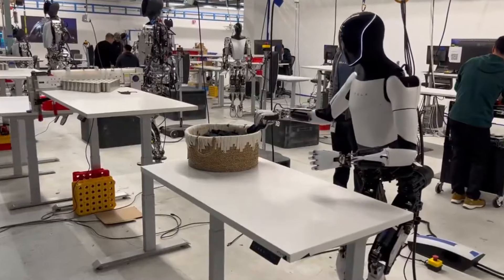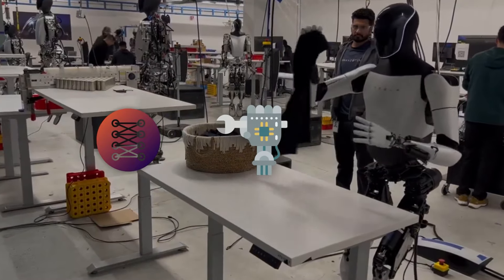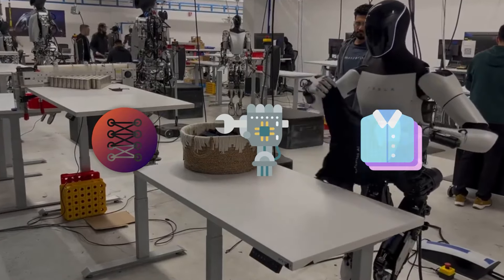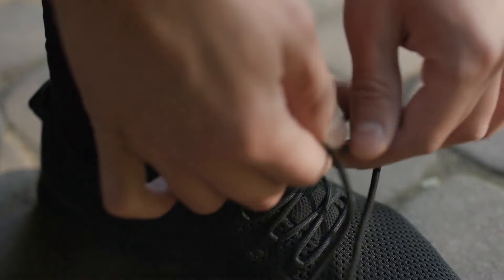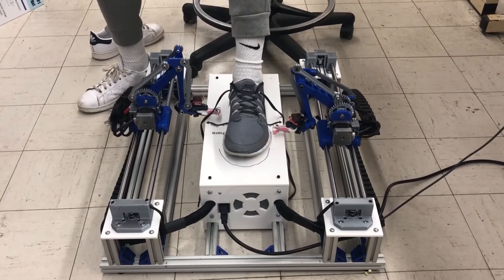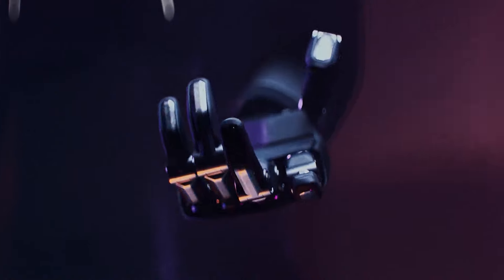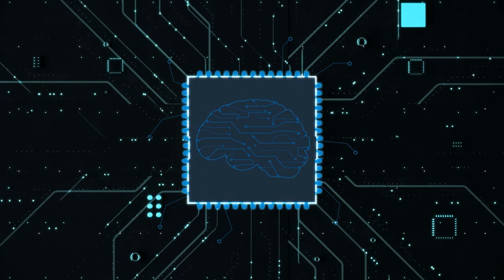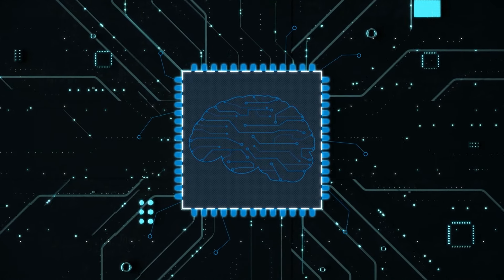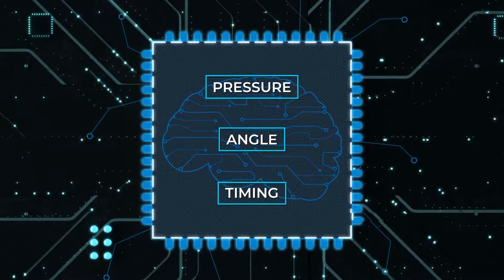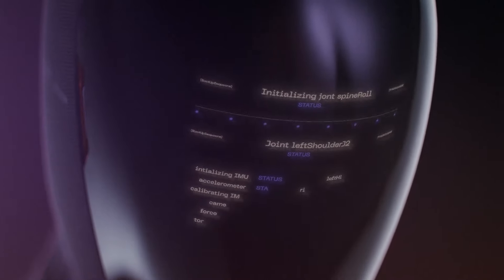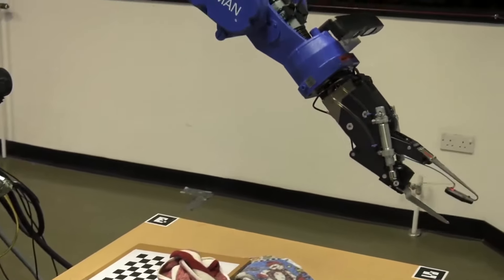Think about it. Tasks like tying shoelaces, placing delicate components into machines, or even folding clothes are second nature to us, but represent highly complex problems for a robot to solve. A robot not only needs to have the right hardware, but also the smarts to figure out how to apply just the right amount of pressure, angle, and timing. This is where AI comes into play, allowing robots to learn and adapt to these kinds of tasks.